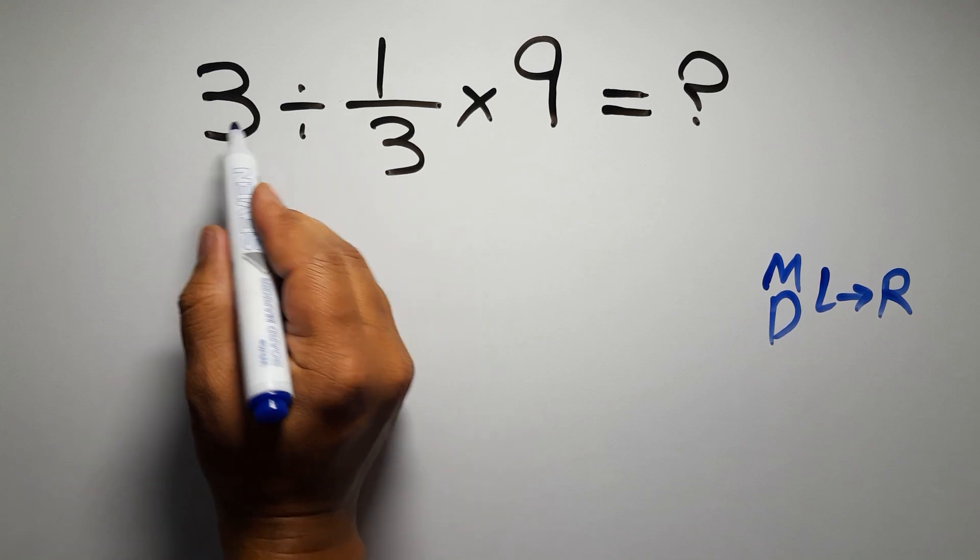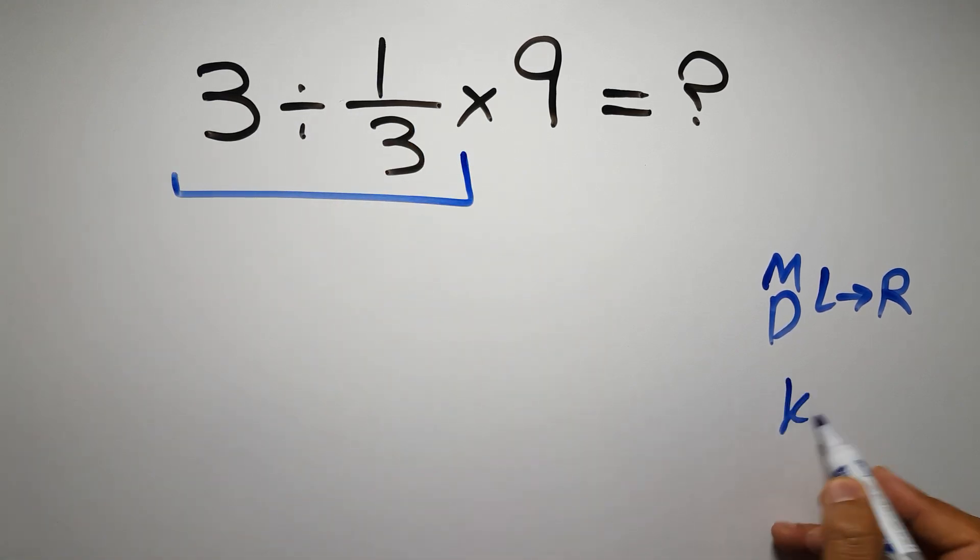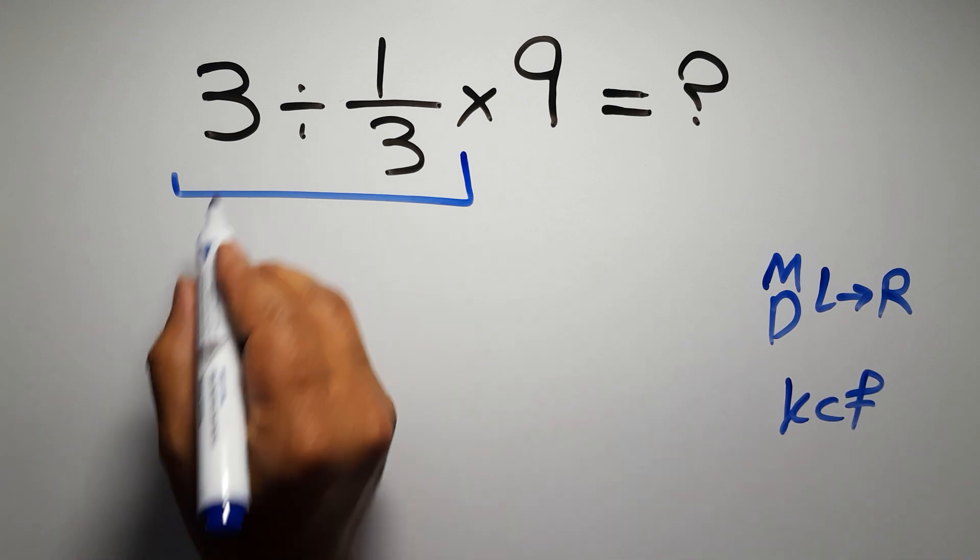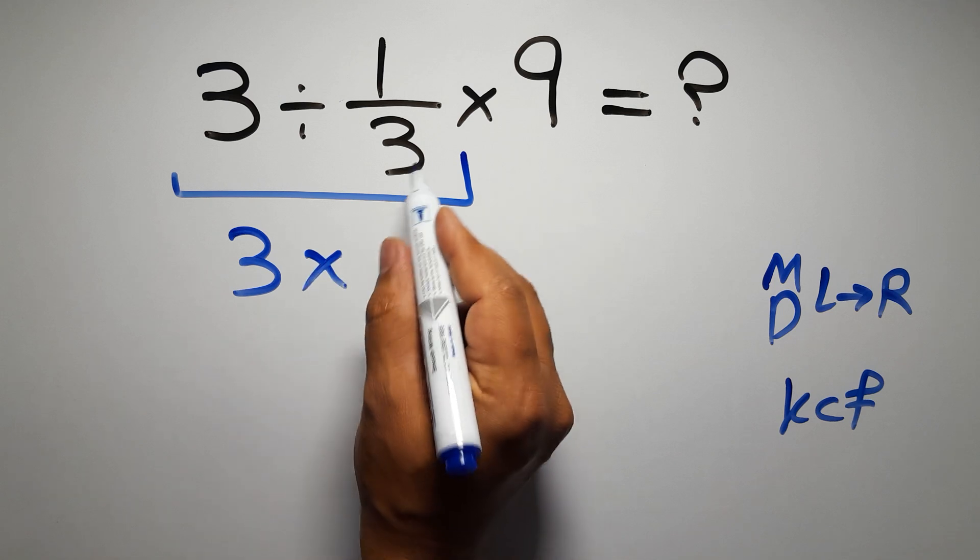So first this division: 3 divided by 1 over 3. According to the KCF rule, K stands for keep, C stands for change, and F stands for flip. We can write: keep the first fraction, change division to multiplication, and flip the second fraction.